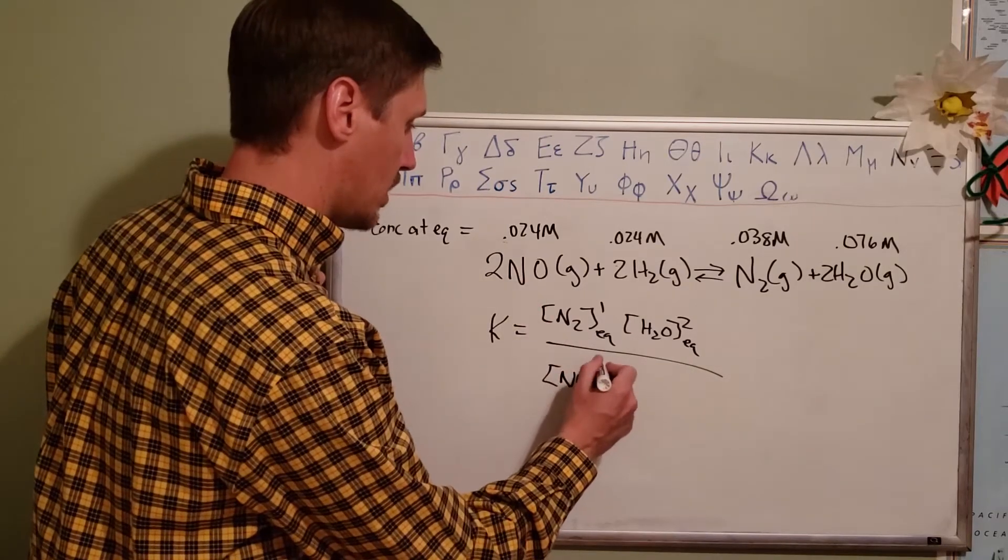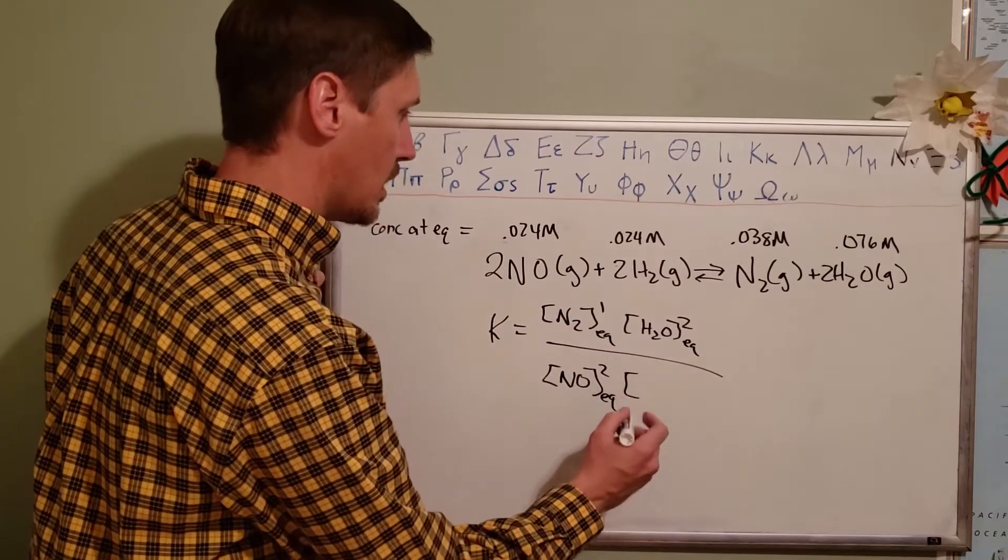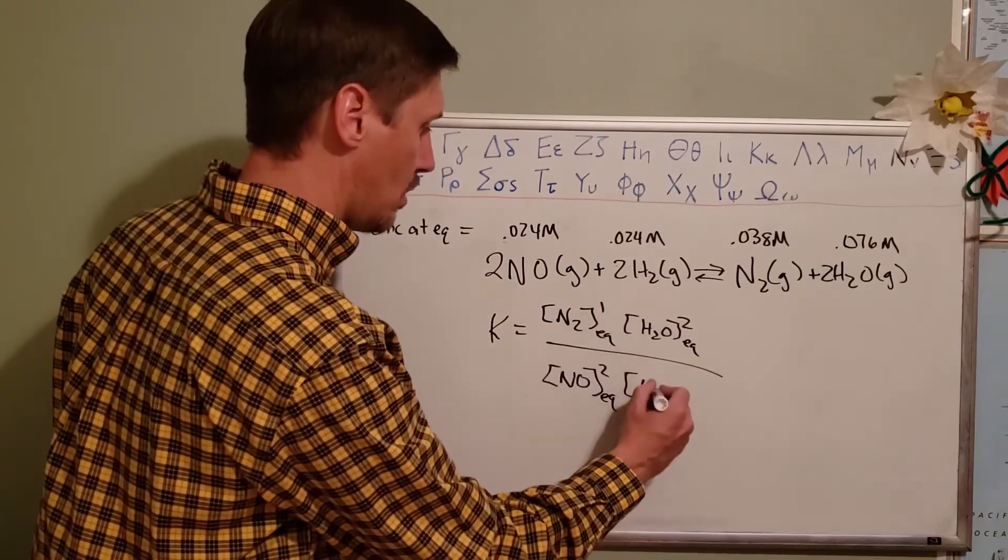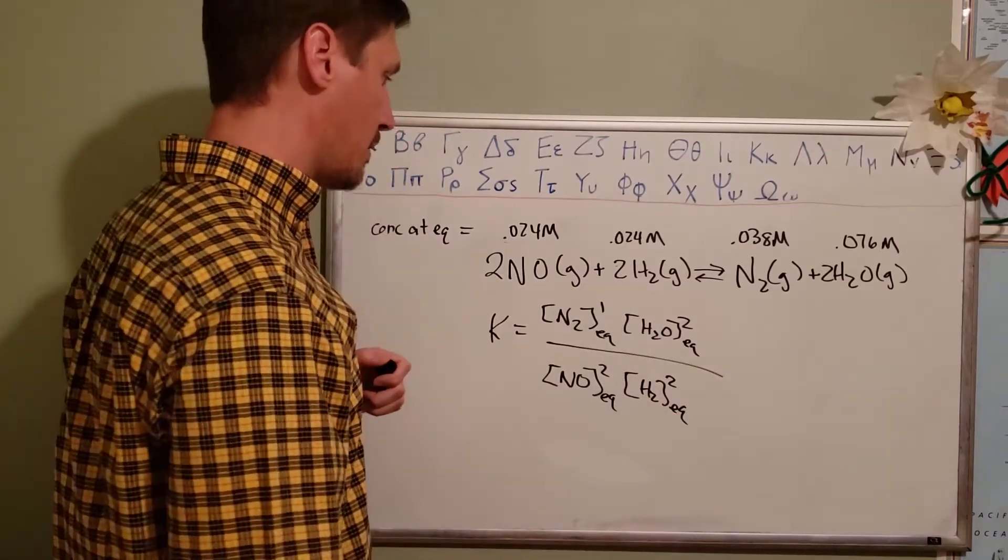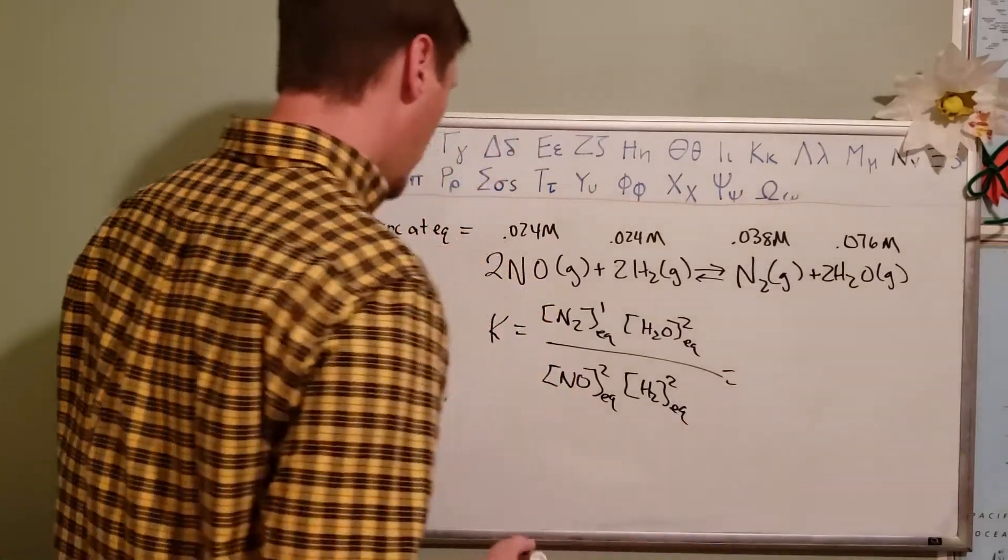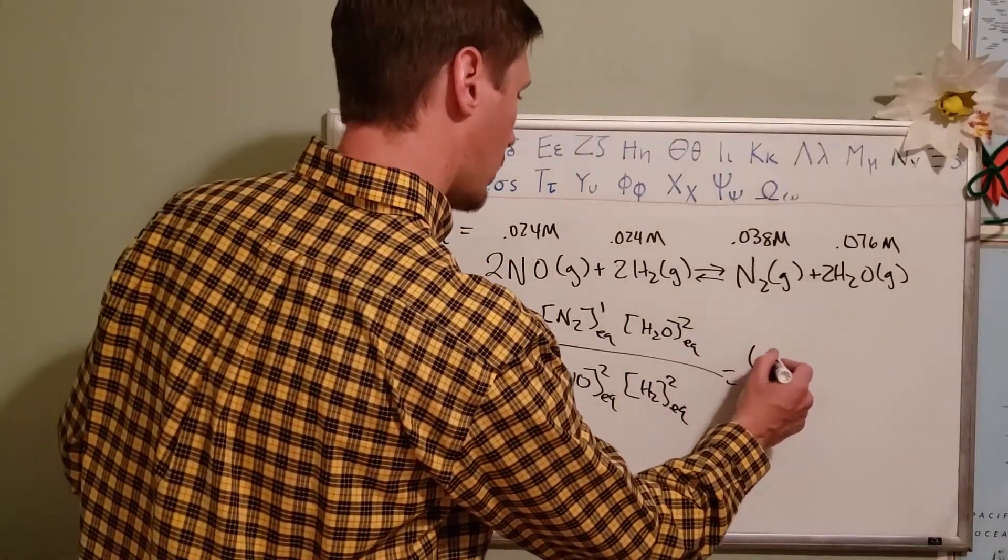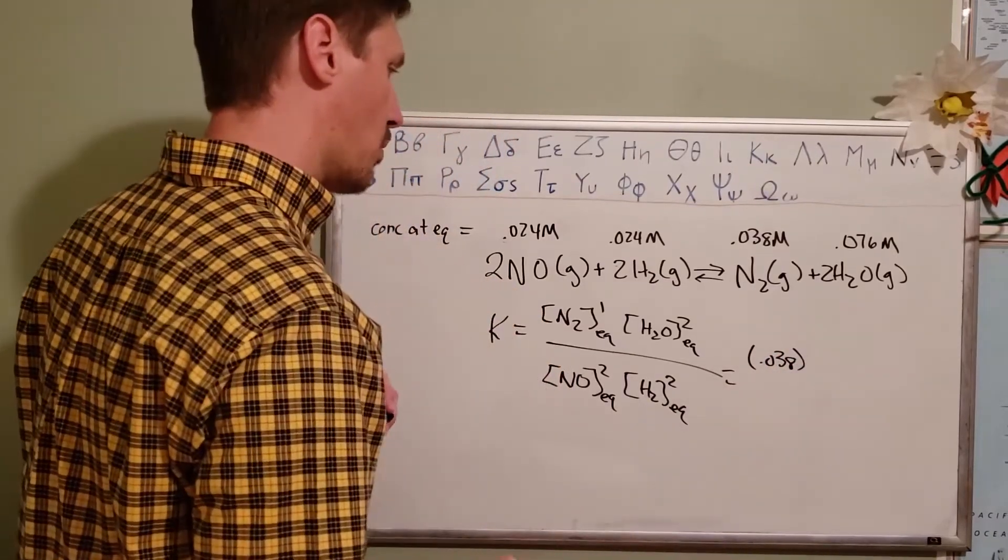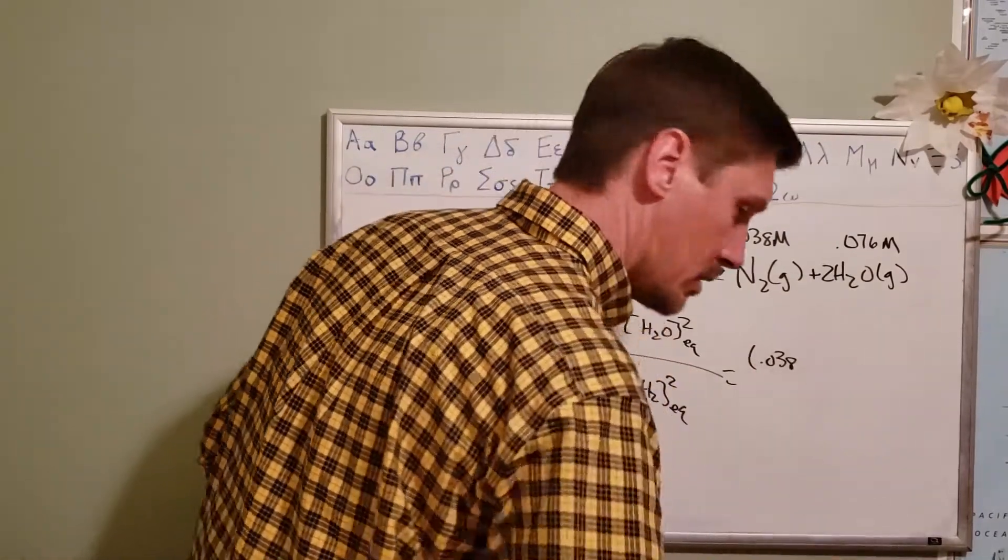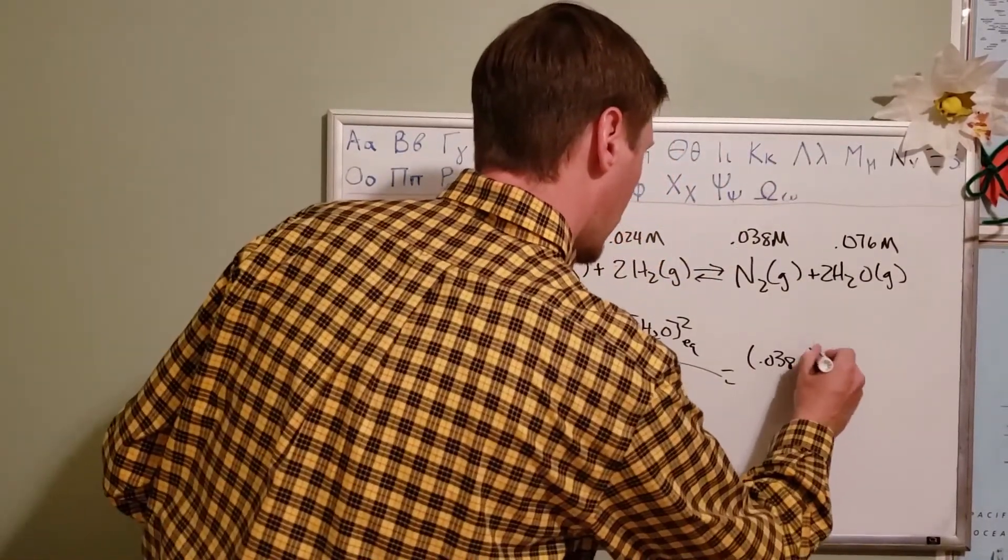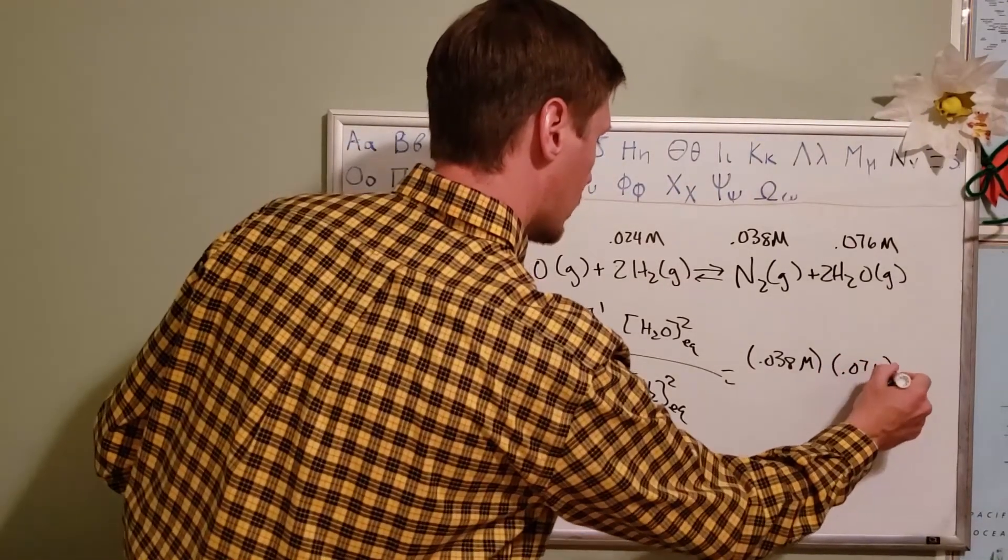That concentration at equilibrium, all of that divided by the concentration of NO, the first of the reactants, raised to the power of two because of its coefficient, that concentration at equilibrium, times the concentration of H2 also raised to the second power. We're going to fill in our values here. This first one here is 0.038 raised to the first power. Let's write down the units so we don't make sure we get our units correct.